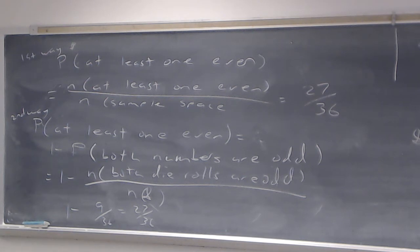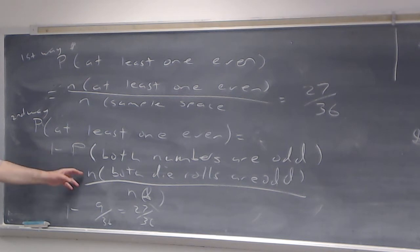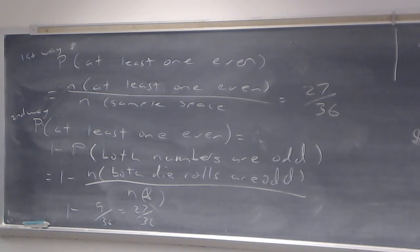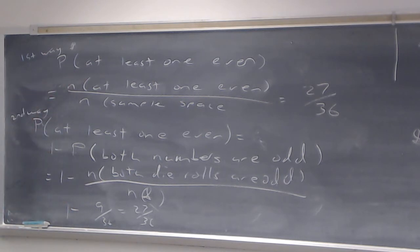These are just two ways of doing it. Using the complement counting technique has us counting fewer outcomes. In some problems this can be more beneficial than others, but this was just an example of it.